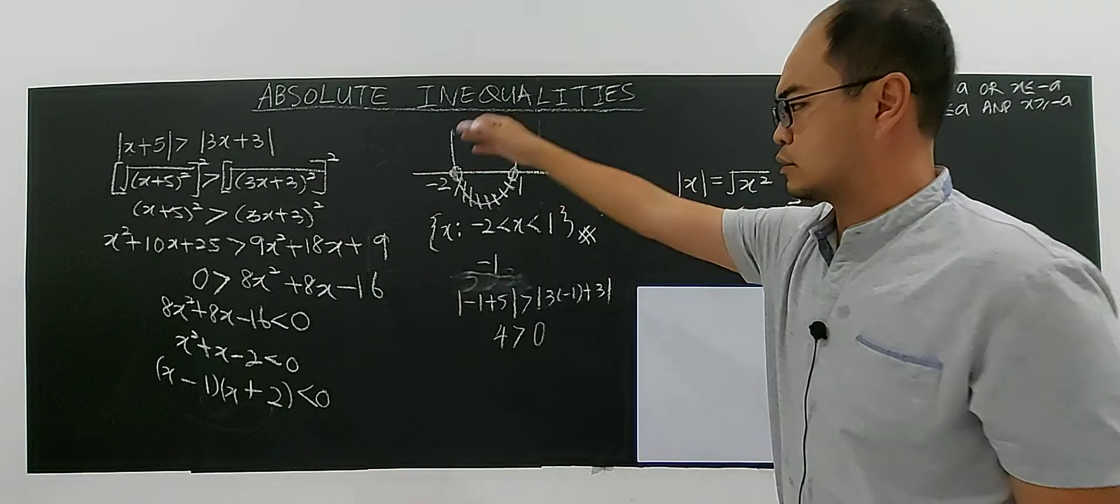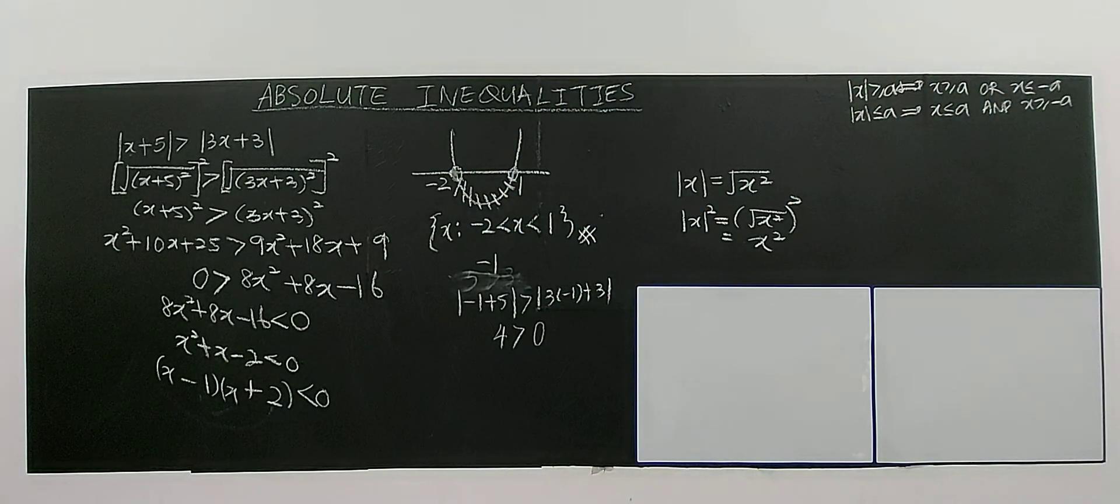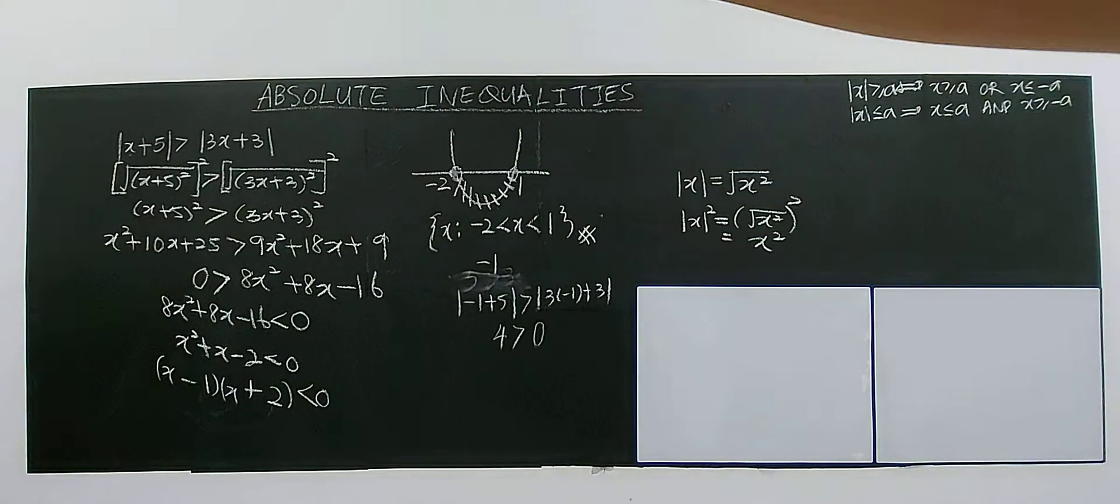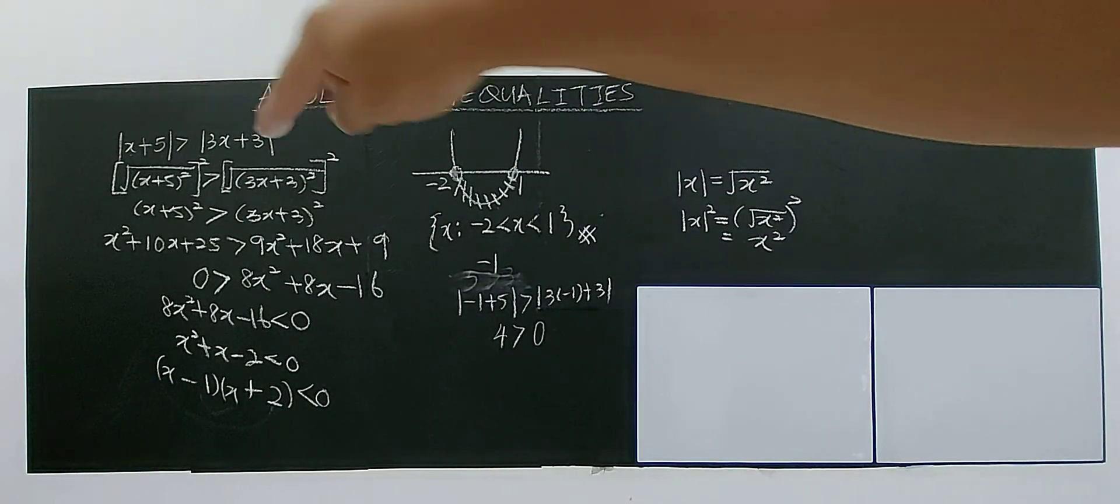I think that's the way how you solve the case where the absolute inequality have both sides modulus. Alright? Good, bye.